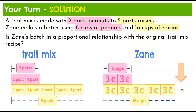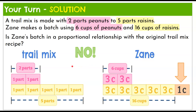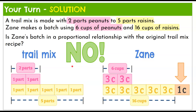Uh-oh — we're short a cup. That means Zane's recipe is not proportional to the original trail mix. He has a non-proportional relationship because he added too many raisins relative to the peanuts. So even though he still has a trail mix, it's not proportional to the recipe.